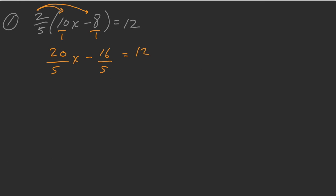Now, 20 divided by 5 we know is equal to 4, so that's 4x. And then on the right side, you can see we still have a whole number 12. But our goal is to get the variables on one side, the numbers on the opposite side — that's step number two.